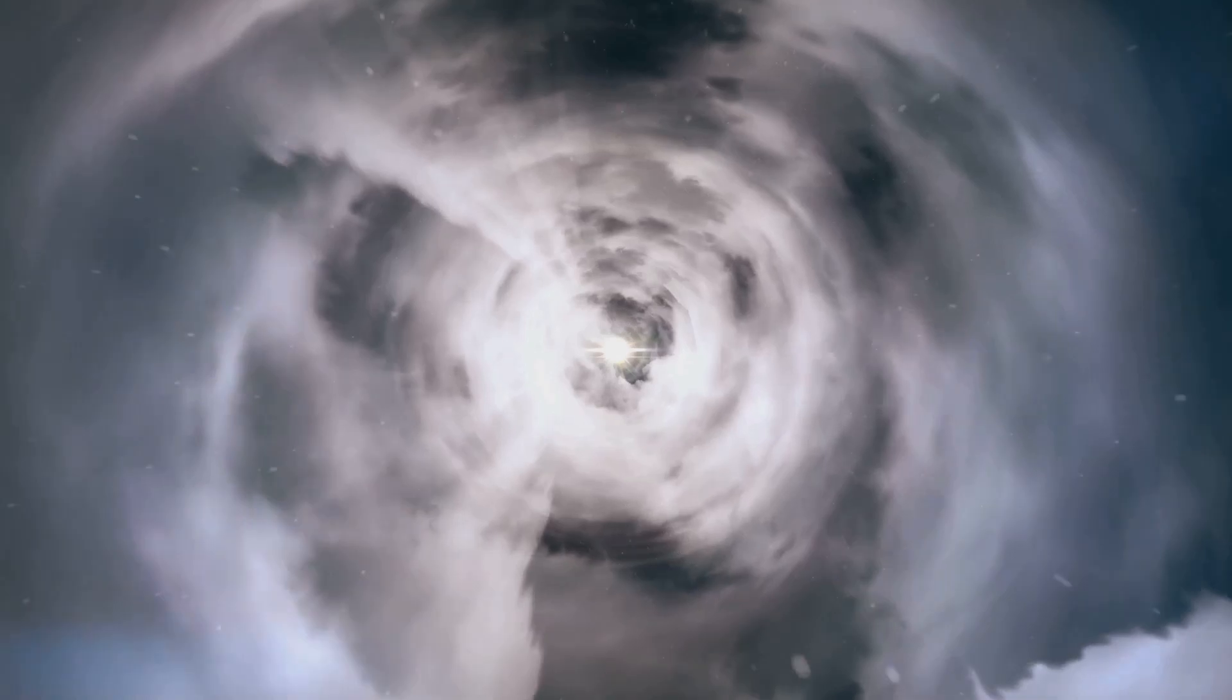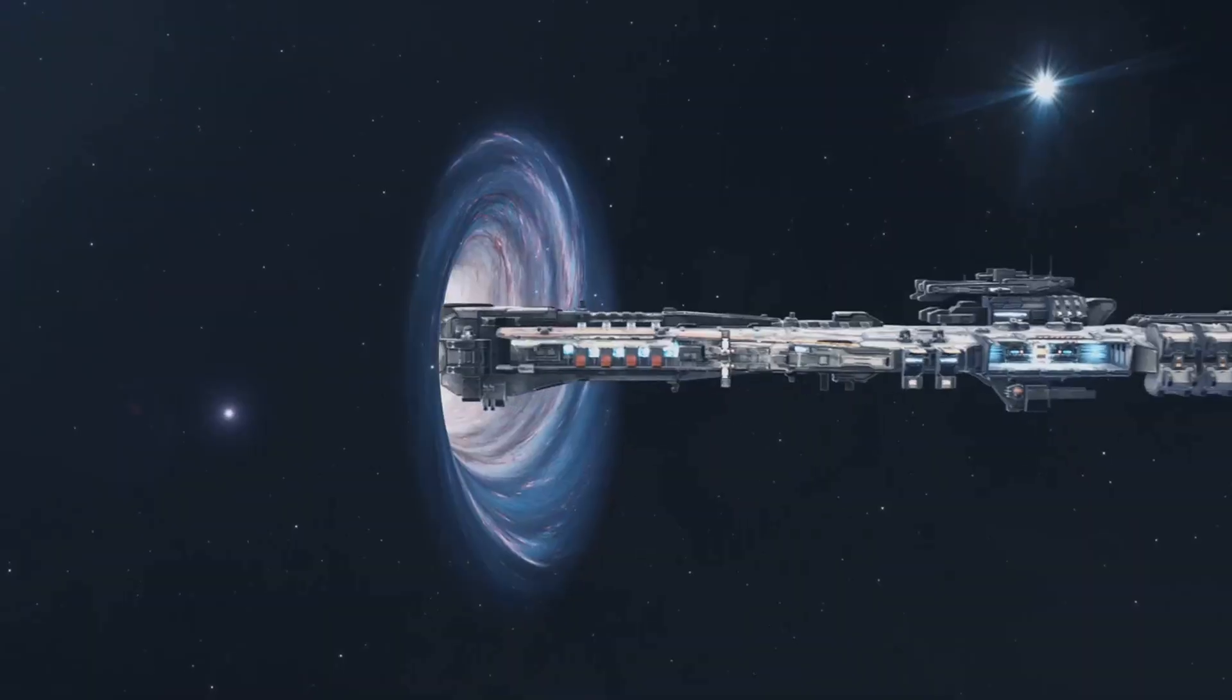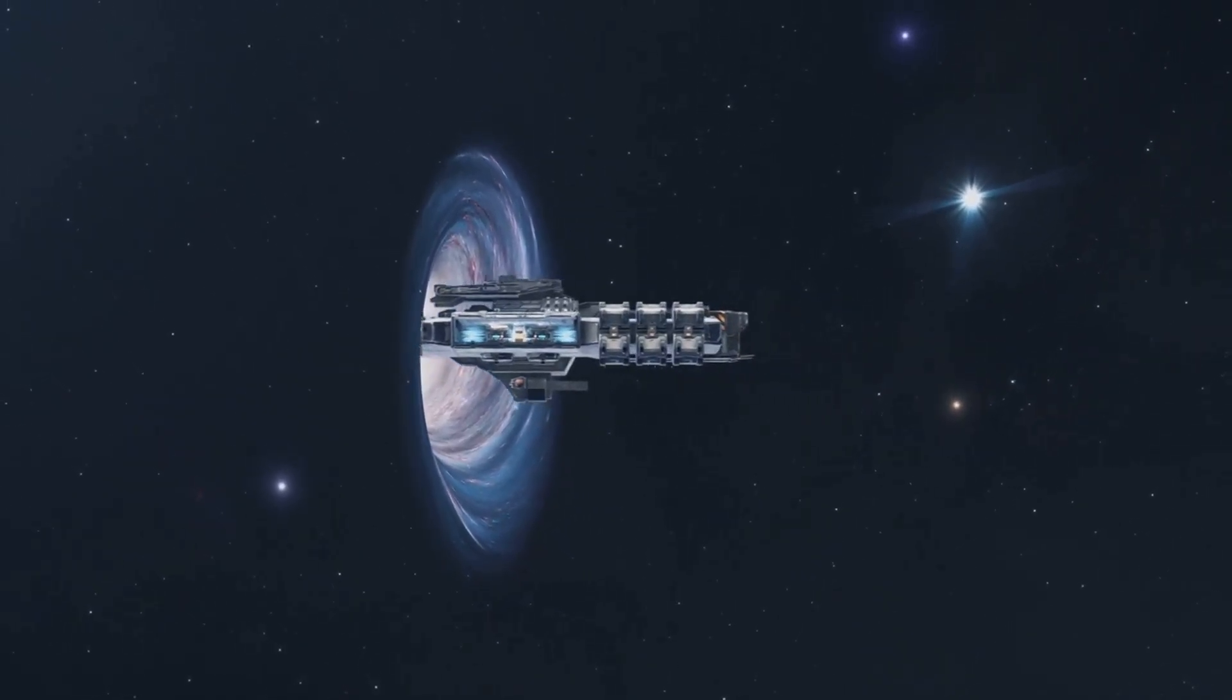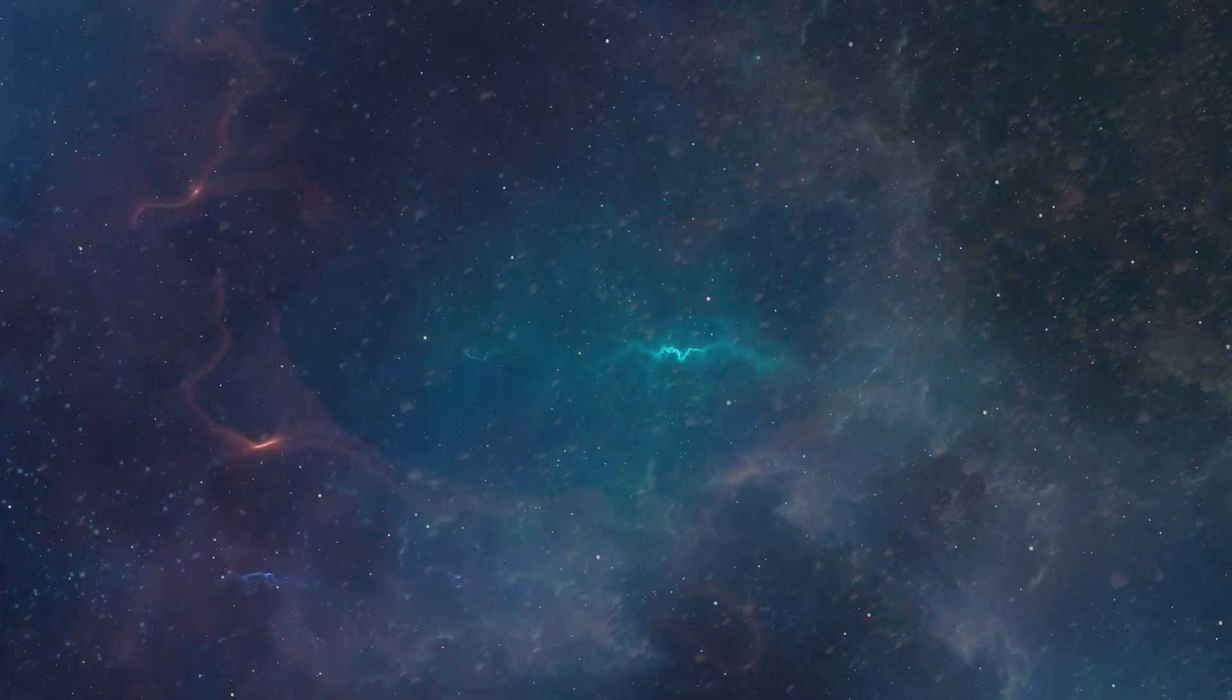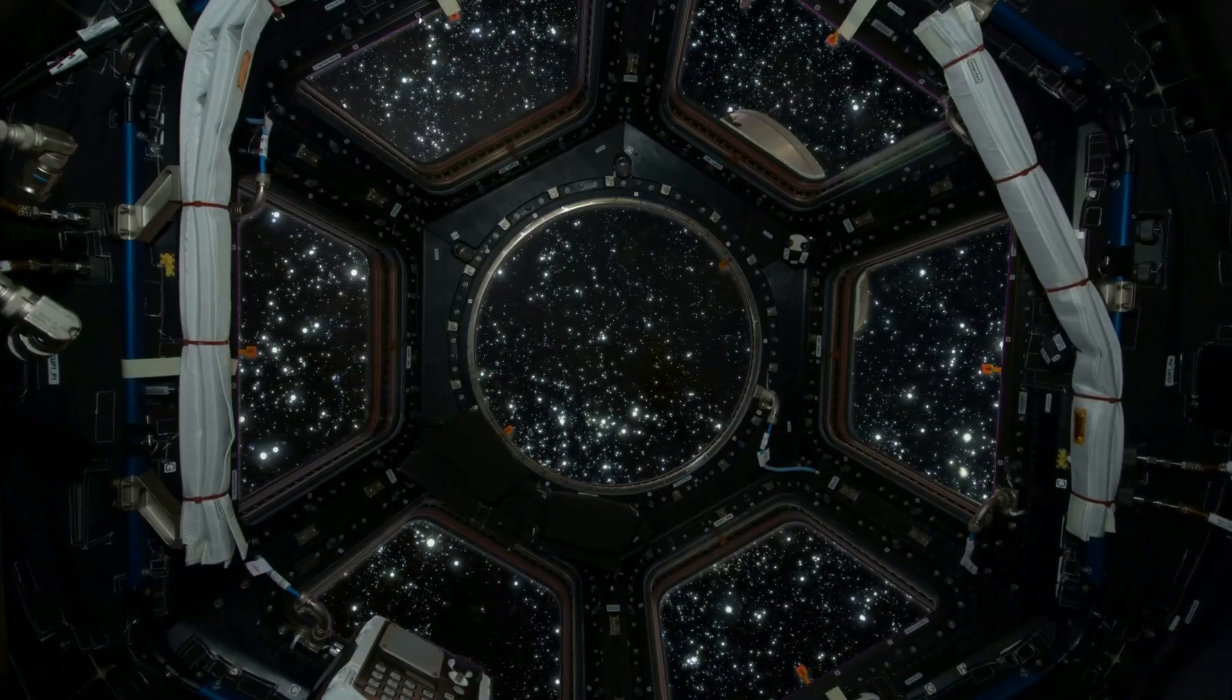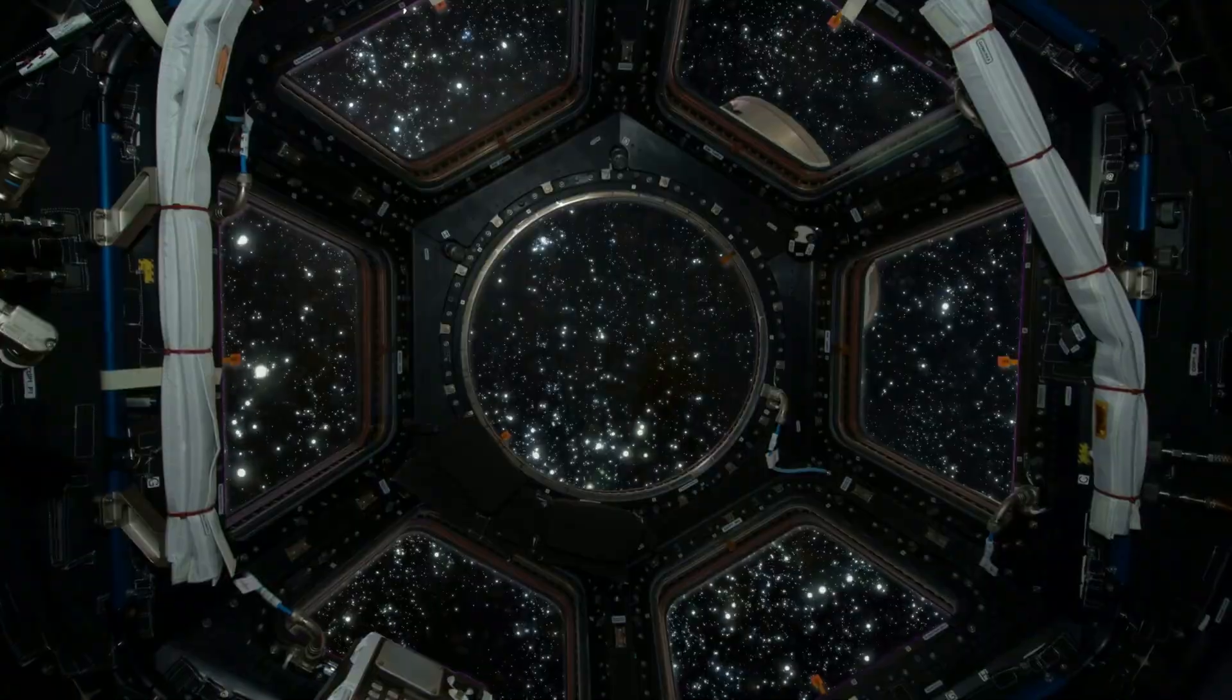And then there's the wild stuff. Warp drives, wormholes, bending space itself. The famous Alcubierre drive is a real theory. It says if you compress space in front of a ship and expand it behind, the ship could ride a kind of wave faster than light. Downside? We'd need something called negative energy, which, as far as we know, doesn't exist. Yet. So, we've got some incredible ideas. Some are nearly within reach, some are still deep in the realm of sci-fi. But one thing's clear, if we want to colonize Alpha Centauri, we'll have to become a species of engineers, explorers, and dreamers.